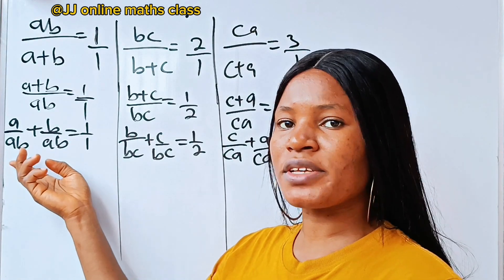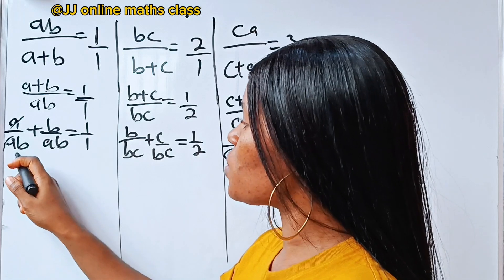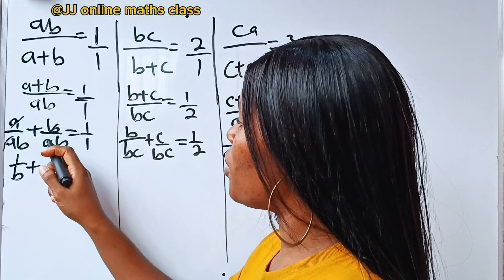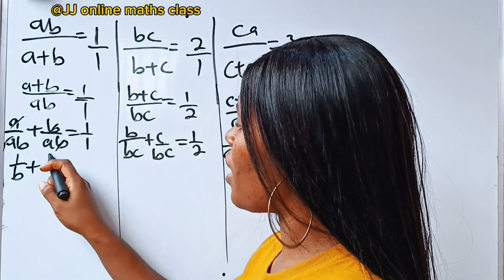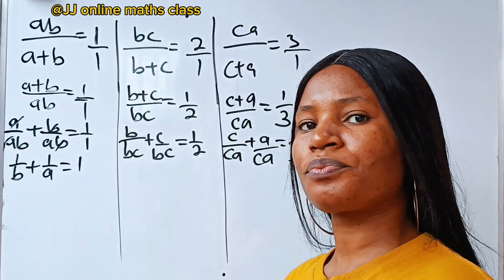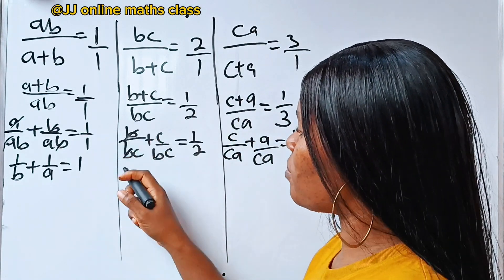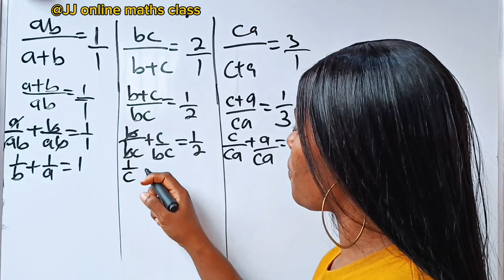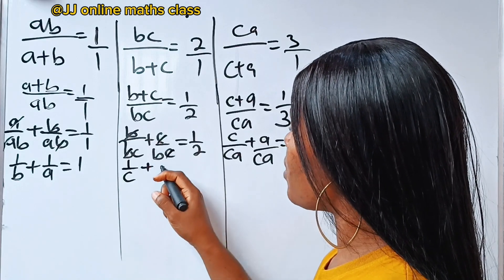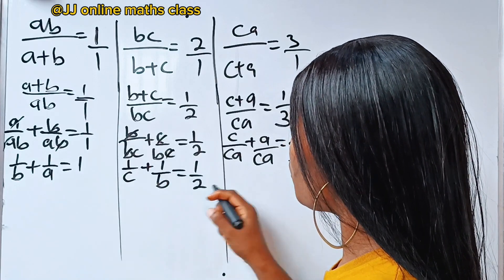Now let's simplify. a cancels with a, leaving 1 over b, and b divides b leaving 1 over a, so 1 over b plus 1 over a is equal to 1. Here, b divides b leaving 1 over c, plus c divides c leaving 1 over b, is equal to 1 over 2. Also for this side, c divides c giving 1 over a, plus a divides a giving 1 over c, is equal to 1 over 3.